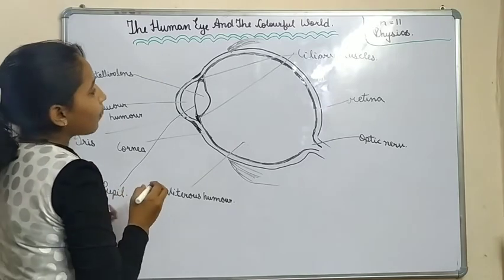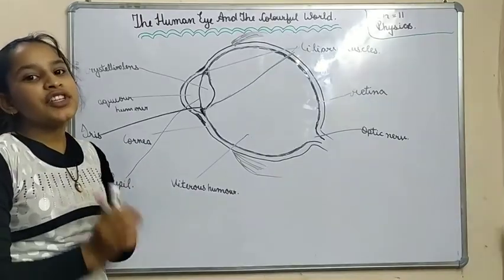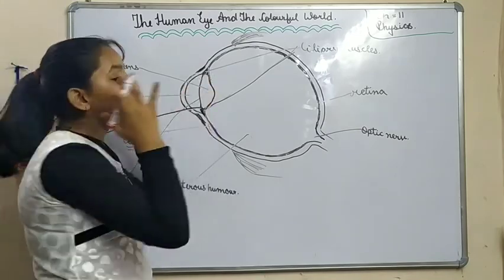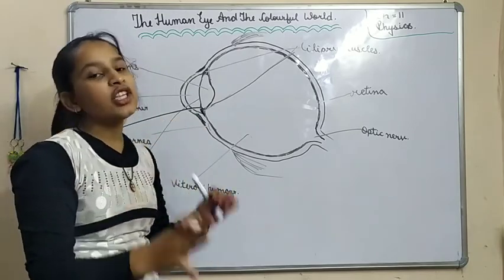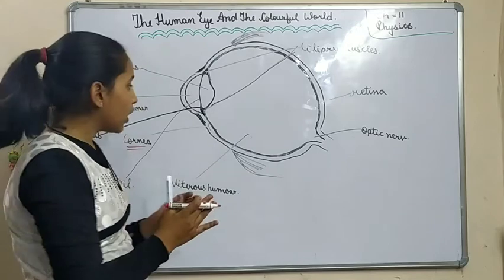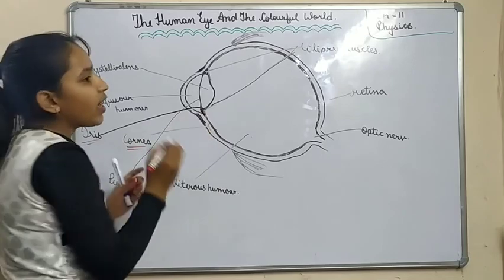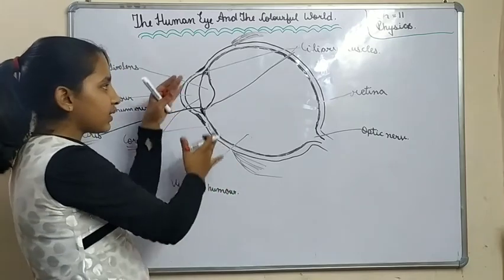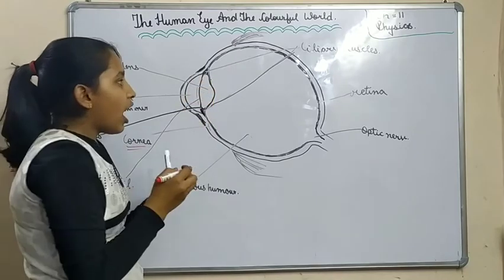We have completed our diagram and now we will see what are their functions. The first function is of the cornea. Cornea is the transparent skin of the eye. This is an amazing fact that cornea refracts 95 percent of light entering into our eye. The next function is of the iris. Iris is a black muscular diaphragm which regulates the size of the pupil.